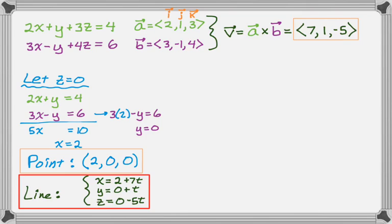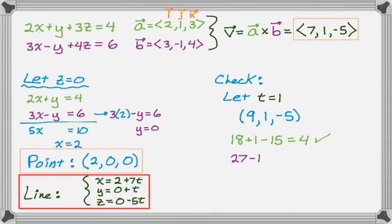One nice thing that you probably want to do at this point is check to see if you got this right. So a kind of easy way to check is pick a value of t and plug it into your line to generate another point that's on the line of intersection. So I'm going to get the point (9, 1, negative 5). Take the point (9, 1, negative 5) and make sure that it's on both of the planes that you were given. So if I plug into the first one, I get 18 plus 1 minus 15 is equal to 4, definitely. And then if I plug into the second, I get 27 minus 1 minus 20, which is definitely 6.